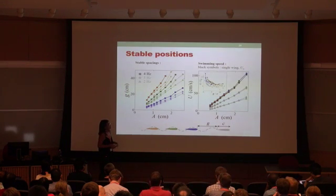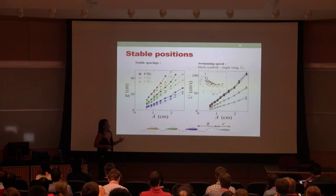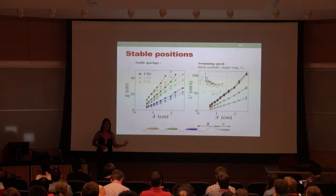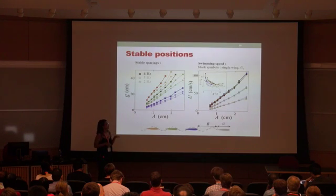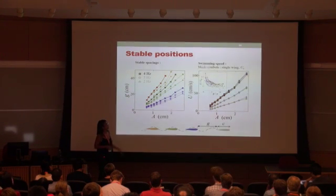So now if you look at the speed, what you see is across all kinematics, you go faster as you flap faster or you flap with a higher amplitude. But what is interesting is if you look at a single kinematic here, you can see that the tandem goes slightly faster than a single wing would. The single wing I'm showing here in black.